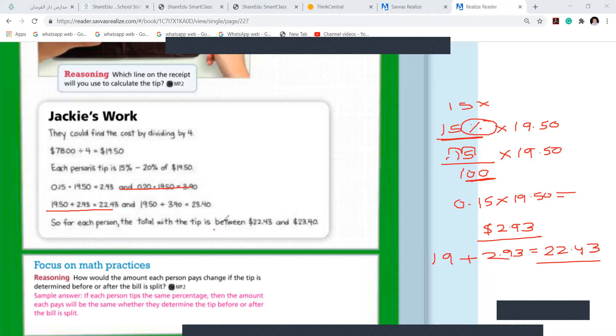Just write. Don't write this tip as between. Just write 20 because we are just solving it. 15% Please copy this. Do you have some space there in your book like this? Copy it. We write Jackie's work. And you just write this. 15% means you have to divide by 100 and multiply by 19.50.